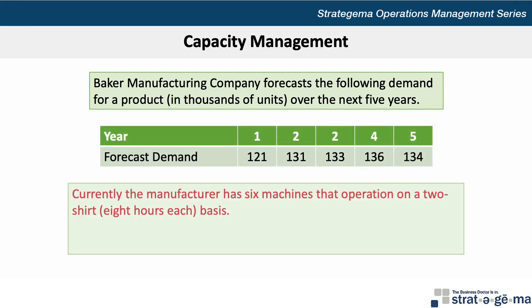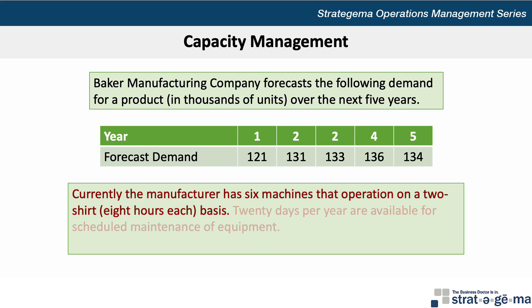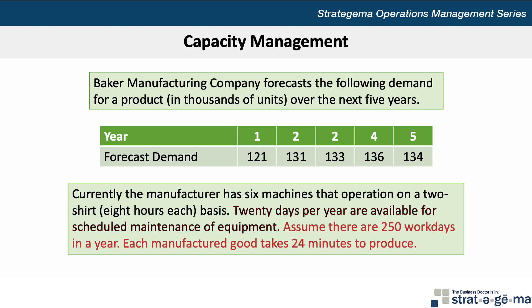Currently, the manufacturer has six machines that operate on a two-shift basis of eight hours each. Twenty days are available per year for scheduled maintenance of equipment. Assume there are 250 working days in a year. Each manufactured good takes 24 minutes to produce.